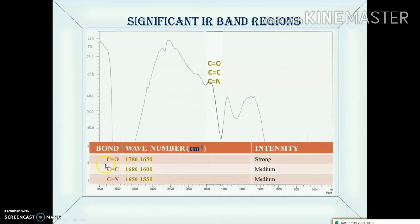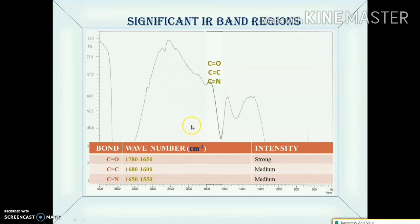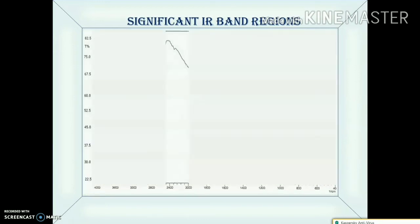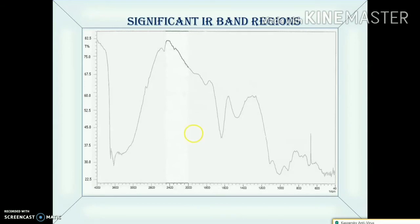The carbon-oxygen double bond, that is the carbonyl group, is one of the most significant groups in molecules, present in aldehydes, ketones, and carboxylic acids. This carbonyl group lies in the wave number range of 1782 to 1650 centimeter inverse, and it appears as a very strong band in the spectrum — one of the strongest bands observed.